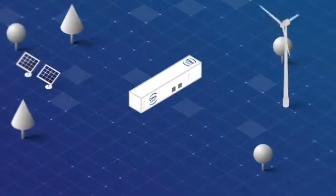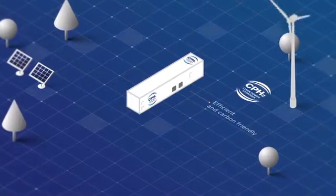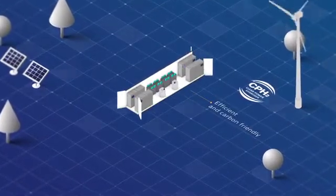Producing hydrogen by water electrolysis is the most efficient and carbon-friendly method. But not all electrolysers are the same.